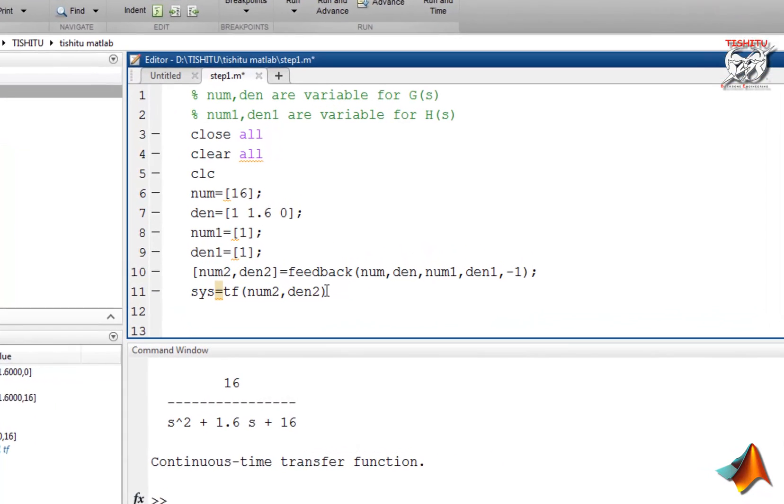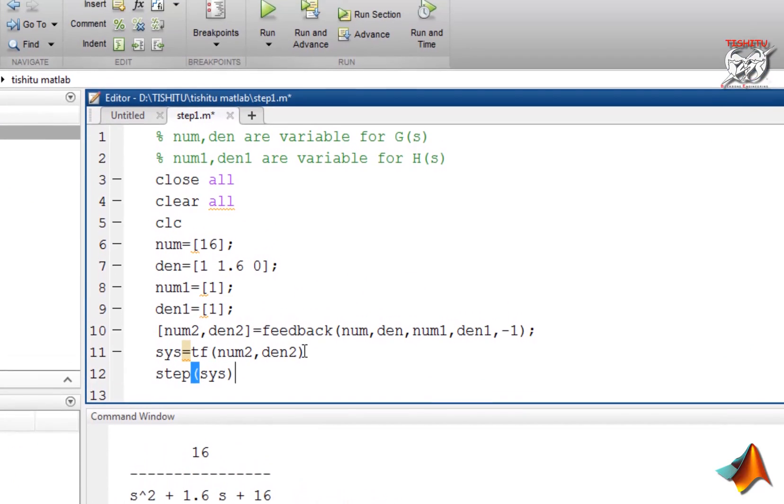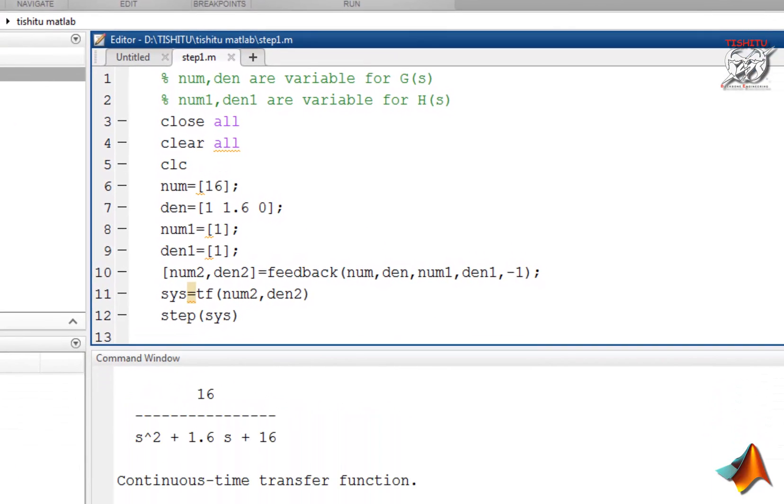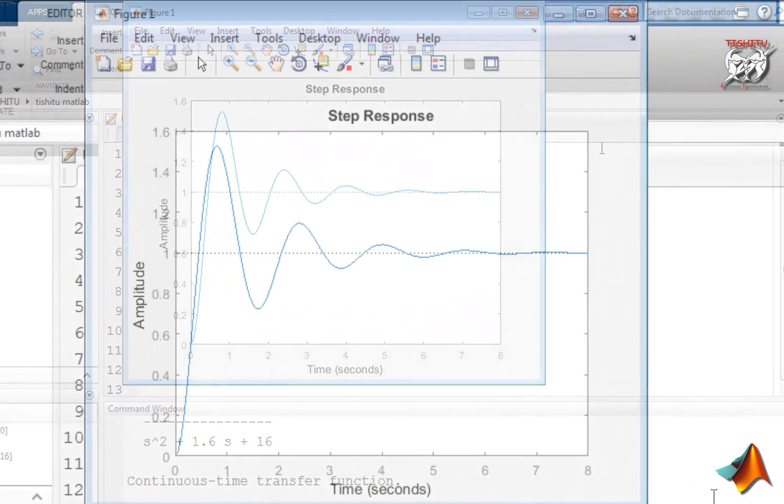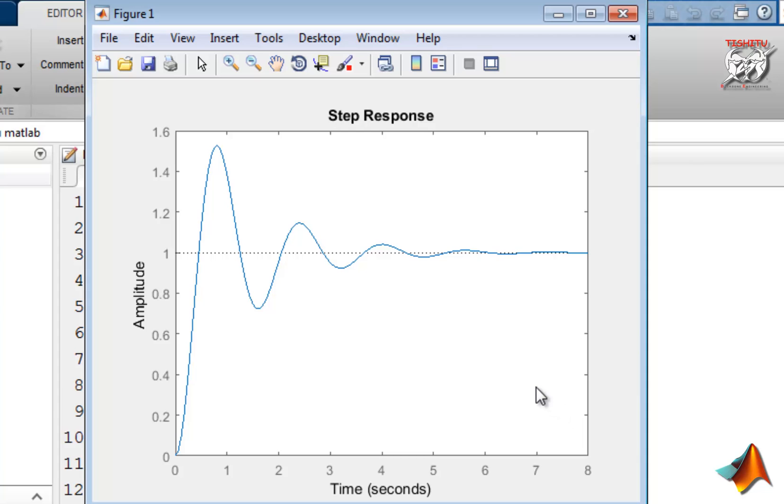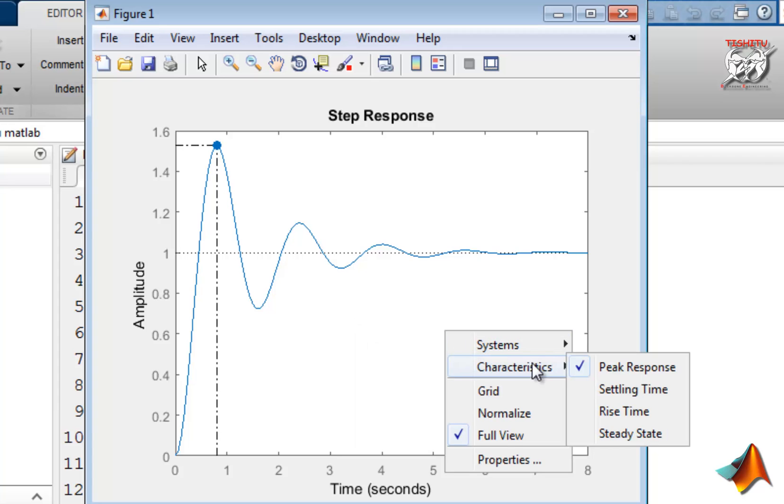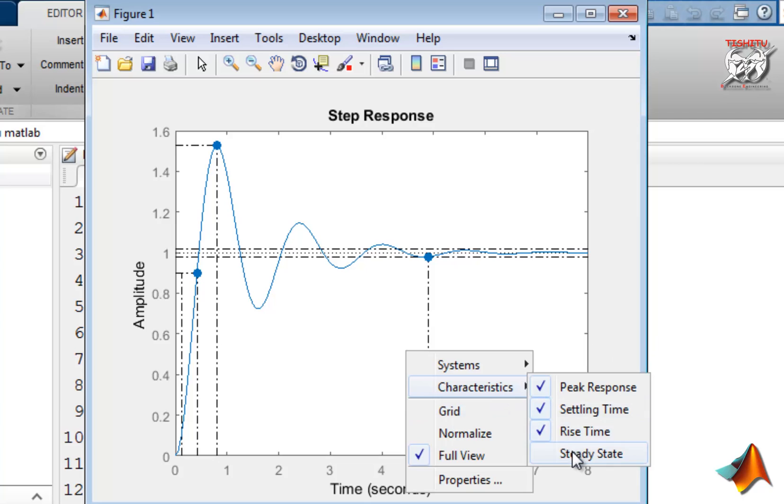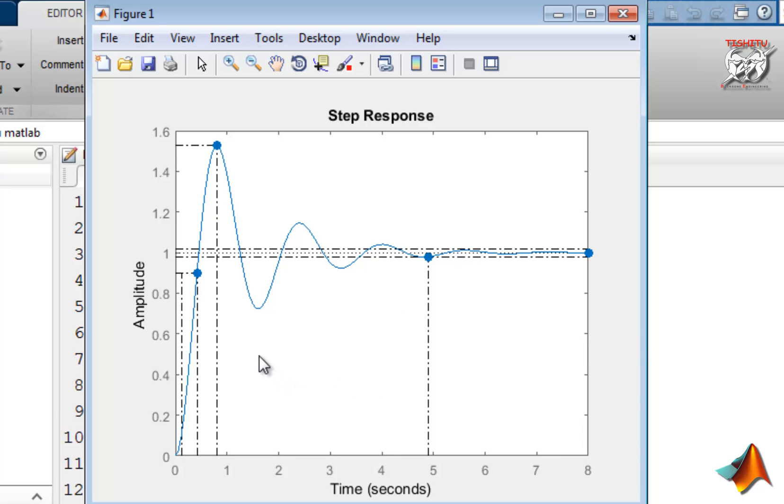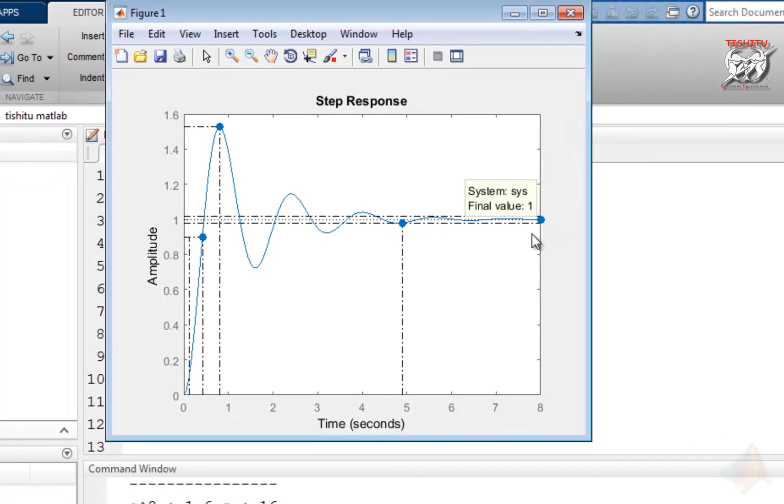Now simply we use one more command, that is step command, like this. And then again run the same file. And we get step response of the system in graphical form. So let's see how to measure parameters on it. Just right click on the graph. You have options in which one option is characteristics. In that you have options like peak response, settling time, rise time, and steady state. Select all options one by one. And you have a mark for each on the graph, as you see. Move your cursor to observe the value for each. As it gives rise time equal to 0.301 seconds, peak amplitude 1.53 at 0.806 seconds, settling time 4.9 seconds, and obviously steady state value equal to 1 as a step input is given.